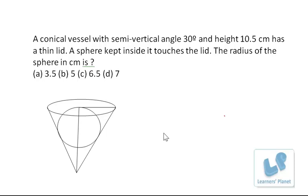Let's solve this problem from 3D mensuration. A conical whistle with semi-vertical angle 30 degrees and height 10.5 cm has a thin lid. A sphere kept inside it touches the lid, and we have to find out the radius of the sphere.